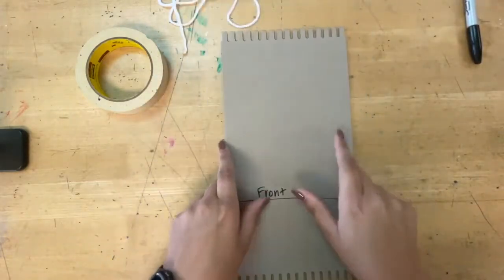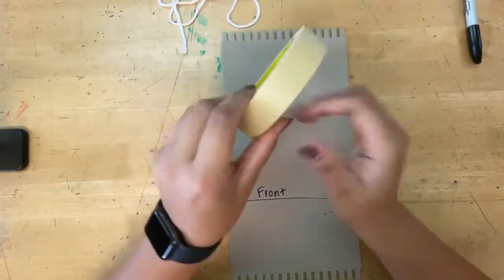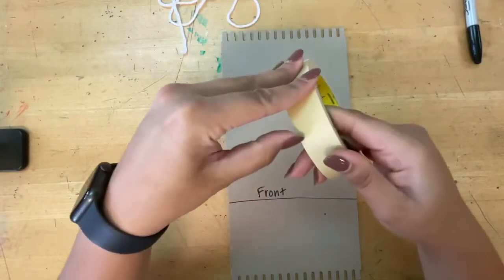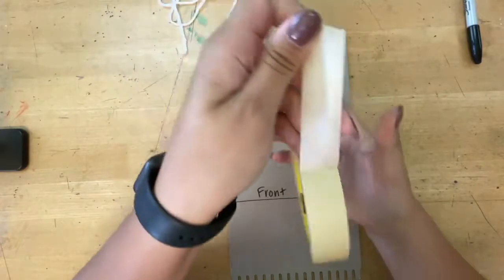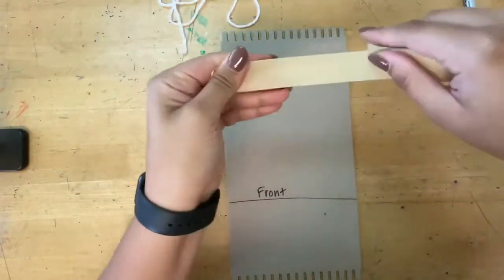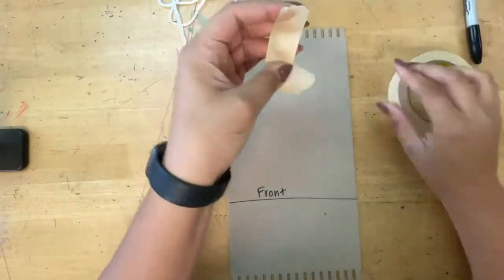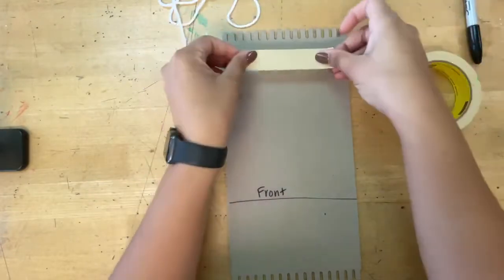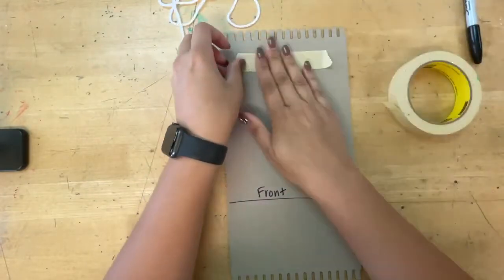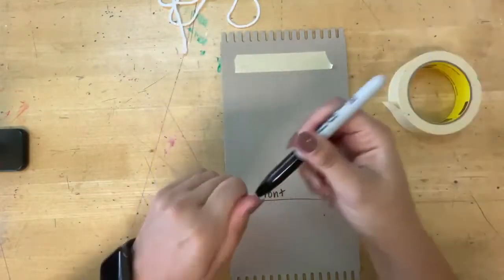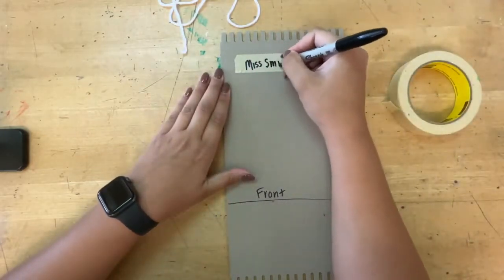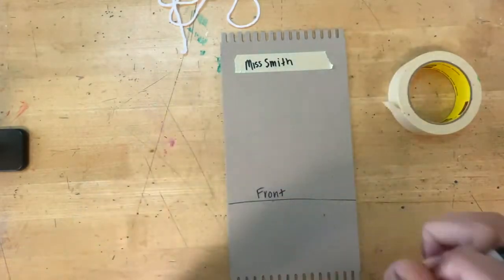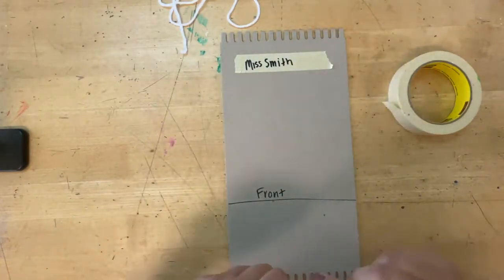First thing we want to do on the front is we need to get our names on the loom. Taking your tape, you're going to peel off a small piece, about five to six inches, rip it off. On the top of the front, put your tape. Then using Sharpie, you're going to write your name. Notice how I'm writing right on the tape. Now we will know whose weaving is whose.